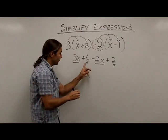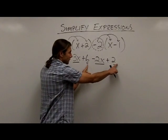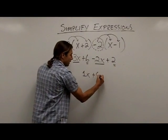Next, I'll go to my constant terms. If I'm adding a positive 6 and a positive 2, that's going to give me a positive 8.